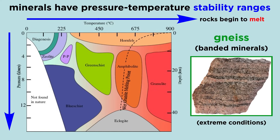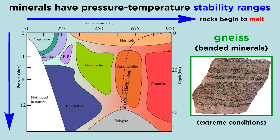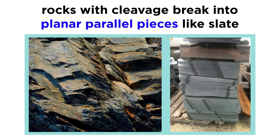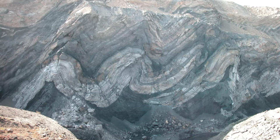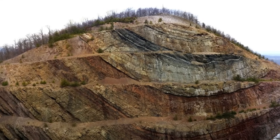Increasing the temperature much more will cause the rock to begin melting. In metamorphic rocks, platy minerals like muscovite tend to align themselves perpendicular to the maximum stress, creating foliation, or a planar fabric within the rock that is called cleavage. When a rock has cleavage, it breaks into planar parallel pieces, like slate. The extent of cleavage development depends on the intensity of the pressure and the quantity of platy materials. Features such as cleavage, folding, and faulting are often present in and contribute to the formation of some of the largest and most impressive geologic structures on earth.